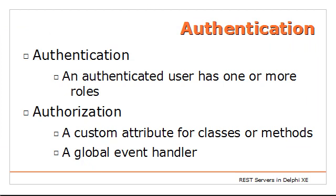The second thing this application does is manage authentication. Datasnap has two concepts: authentication, determining if a user is known with a valid username and password, and authorization through roles. Users can be added to one or more roles. We can implement a global event handler to determine for each method whether a user in a given role has permission to execute it, or attach a custom attribute to a class or individual method to control access.